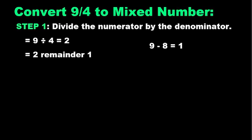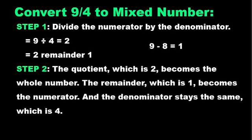So 9 divided by 4 is equal to 2, so we have 2 remainder 1. Step 2: The quotient which is 2 becomes the whole number.